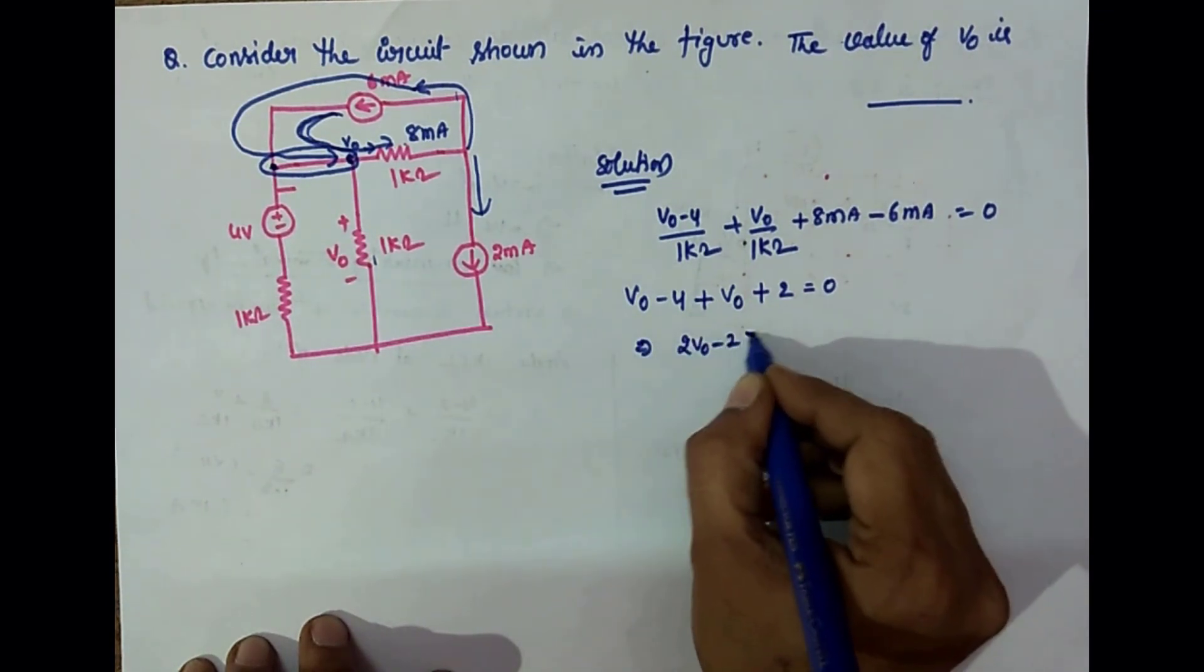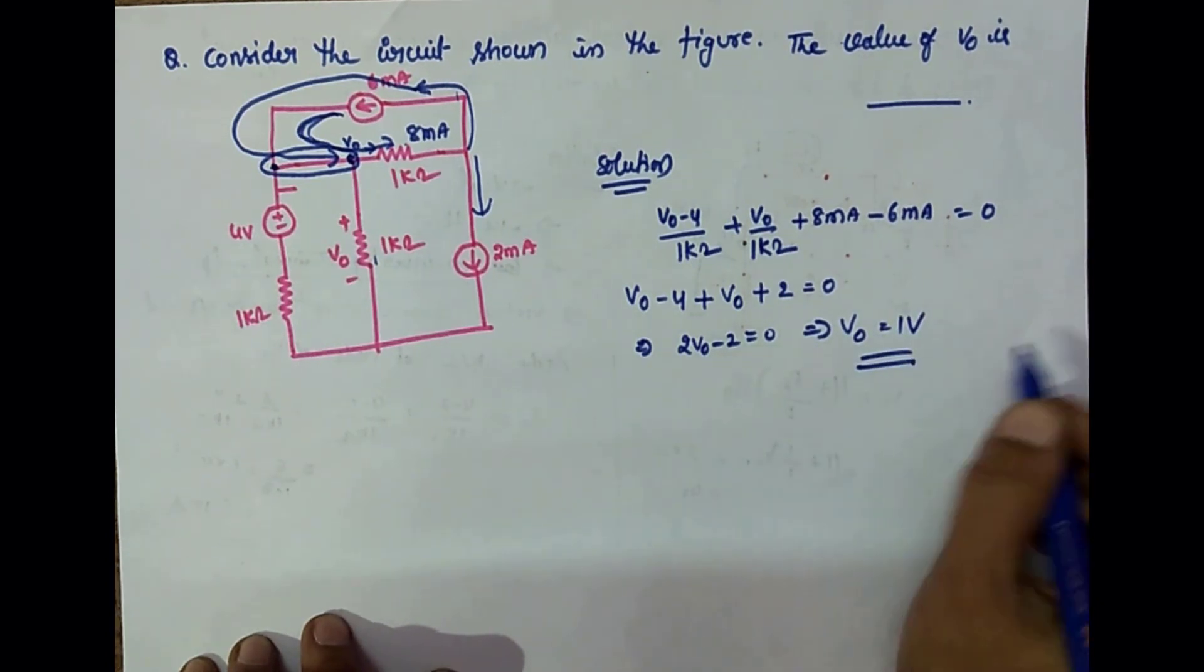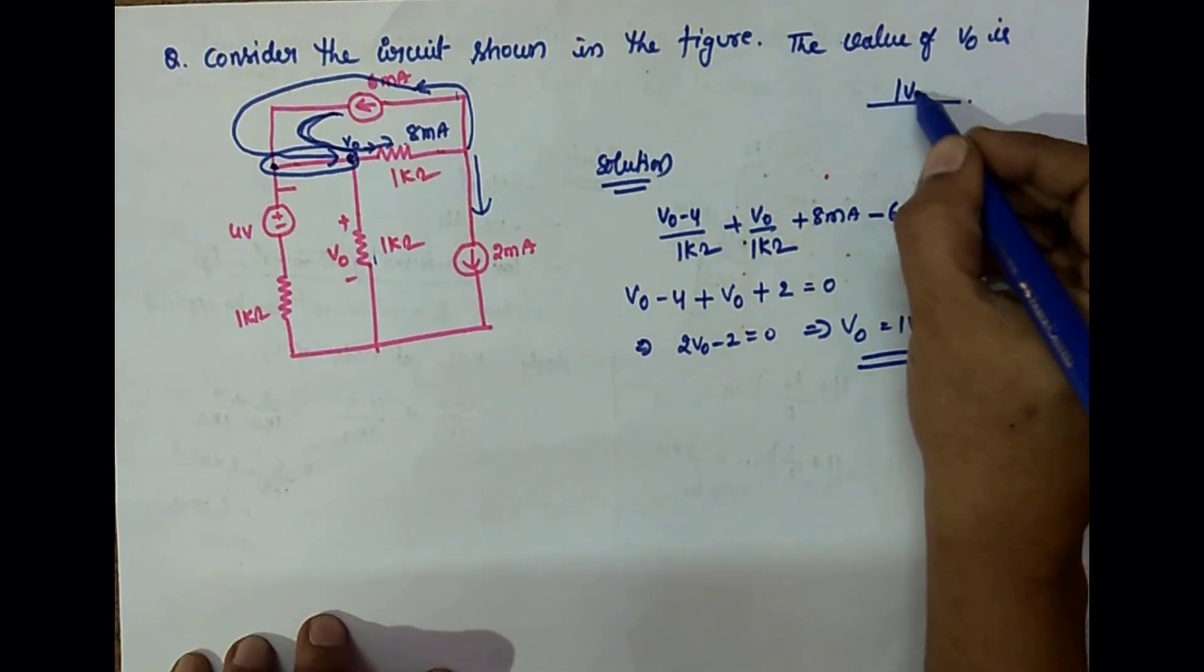V0 is equal to 1 volt. So the answer is 1 volt.